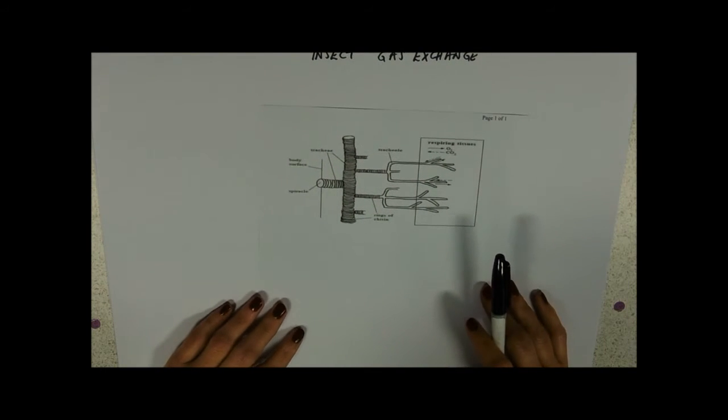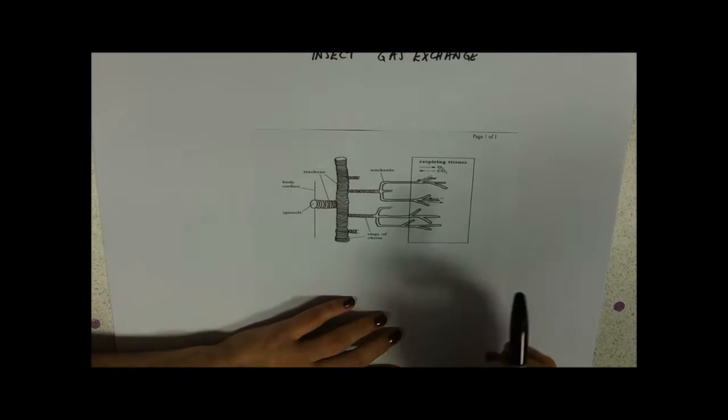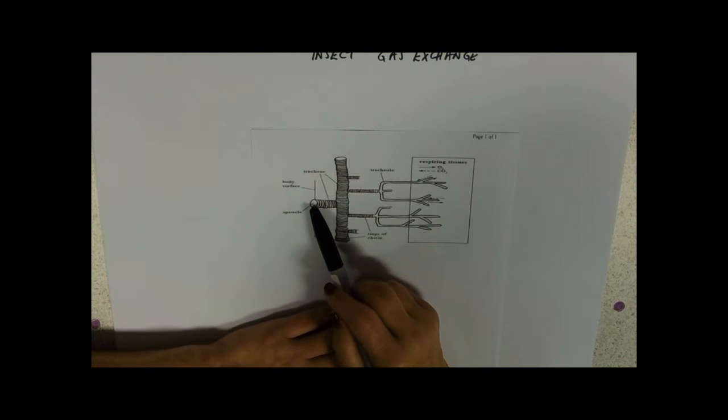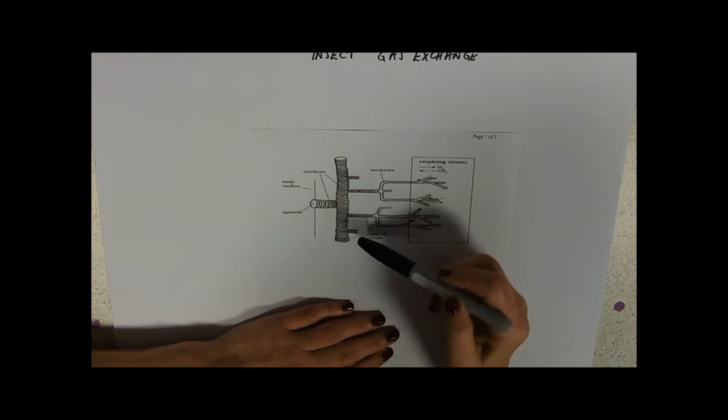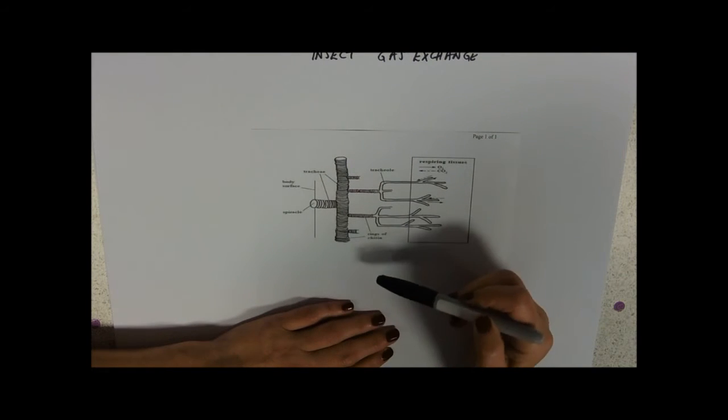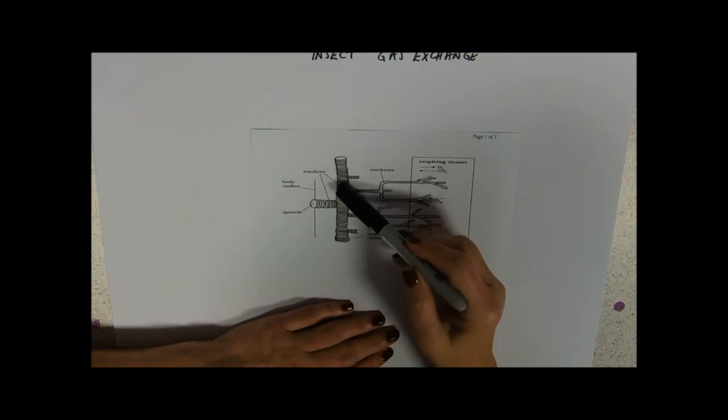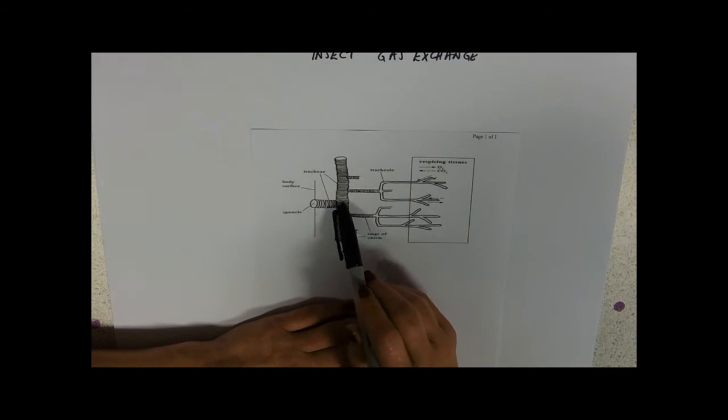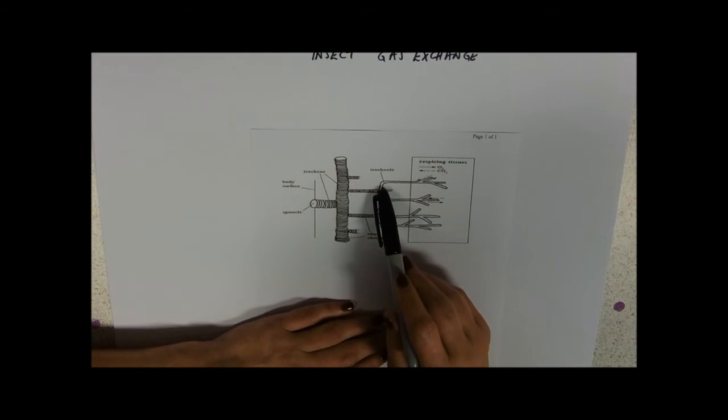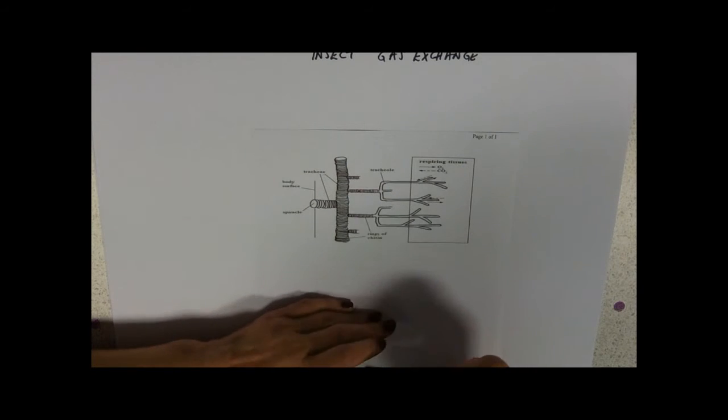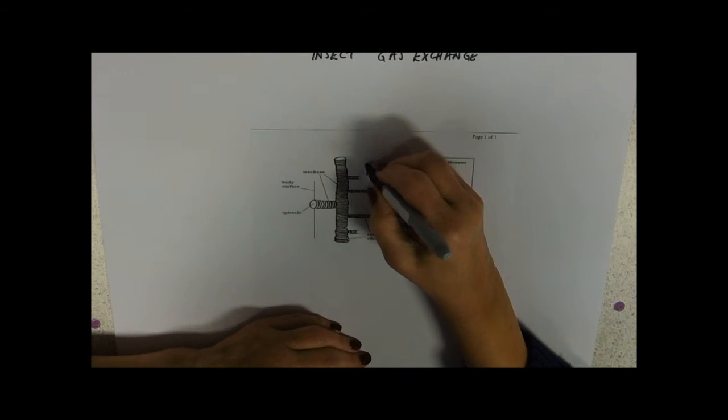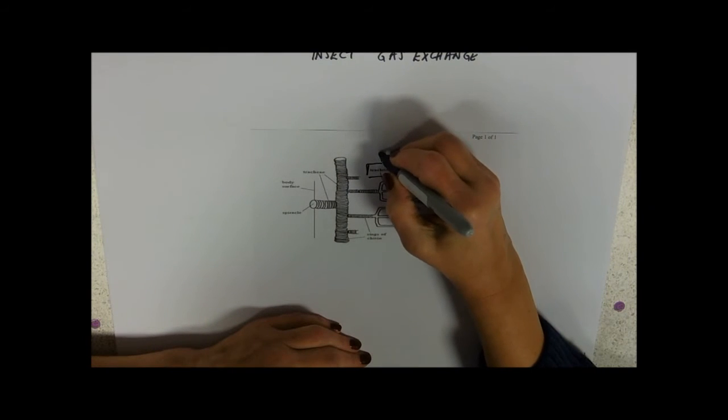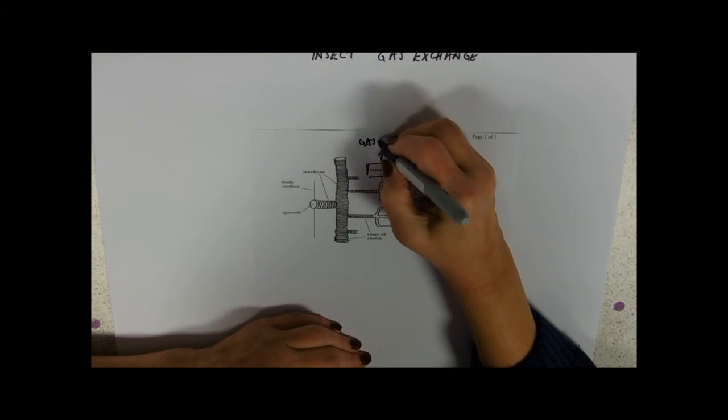So this is a sort of schematic. We've got our spiracle leading to the outside, letting the gases in, letting the carbon dioxide out. So oxygen in, carbon dioxide out. You can see the rings of chitin around these. These are the tracheae. And then they branch off into tiny, tiny tracheoles. And the tracheoles, these are the gas exchange surface.